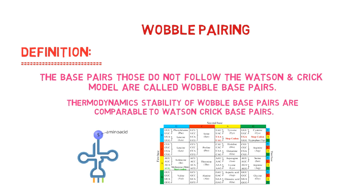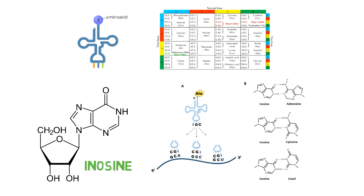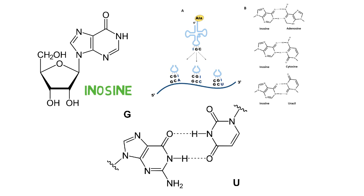The genetic code makes up for disparities in the number of amino acids for codons by using modified base pairs in the first base of the anti-codon. One important modified base is inosine, which can pair with three bases: uracil, adenine, and cytosine. Another critical base pair is the GU base pair, which allows uracil to pair with two bases: guanine and adenine.